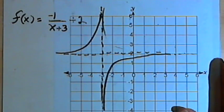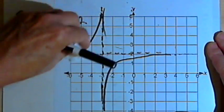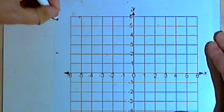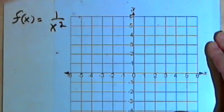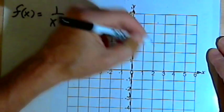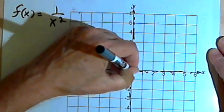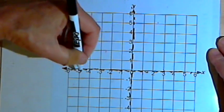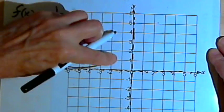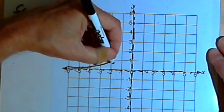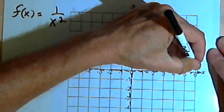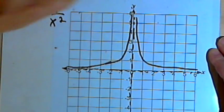We're going to have basically the same kind of transformations if we have the graph of 1 over x squared. So let's take a look at that. The basic graph for 1 over x squared once again is going to have a vertical asymptote along the y-axis and a horizontal asymptote along the x-axis. Both of the curves will move towards y equals positive infinity.